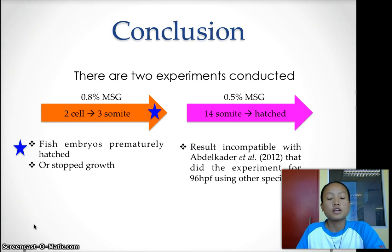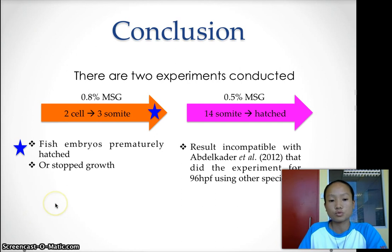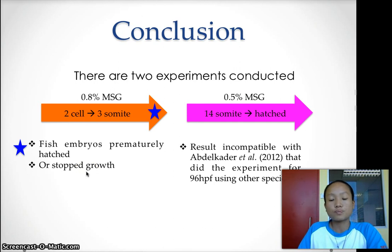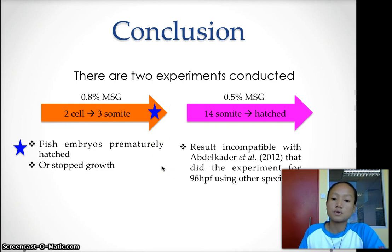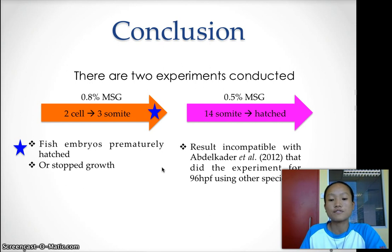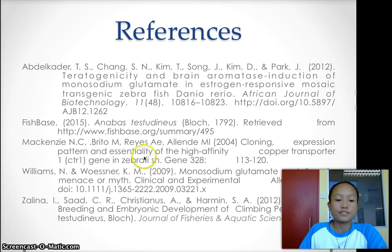In conclusion, two experiments were conducted. The first was at 0.8% MSG, starting from the 2-cell stage all the way to 3 somites, where the fish embryos prematurely hatched or stopped their growth around 3 to 8 somites. We then continued at 0.5% MSG starting from around 14 somites until hatch. The results were not entirely compatible with the previous 2012 study that used zebrafish at 96 HPF. We hope you have a nice day — thank you very much.